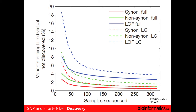Besides having lots of reads to give you additional power, having additional sequence samples also gives you a lot of extra power. This is from the 1000 Genomes Consortium pilot paper. On the y-axis they show how many variants in a single individual they're not discovering. When you only have small numbers of samples, that can be as high as 20%. But as you add more and more samples to your population, the chances of not discovering one of those variants decreases quite substantially, and it levels off pretty quickly.